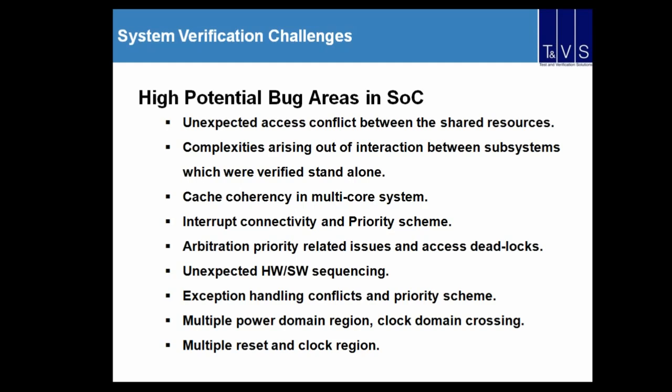Cache coherency is another major issue in multi-core systems. ARM's AXI port supports cache coherency — the question is how locally shared data can be kept up to date across the entire system. Connectivity brings additional challenges: priority schemes, arbiters, deadlocks, and priority-case sequencing all need to be addressed.